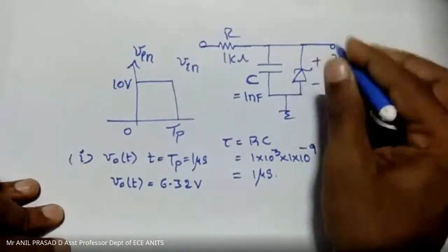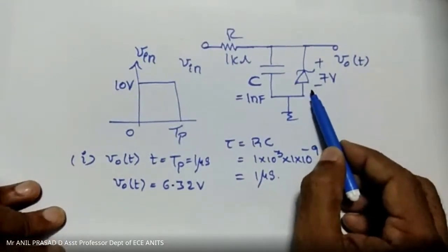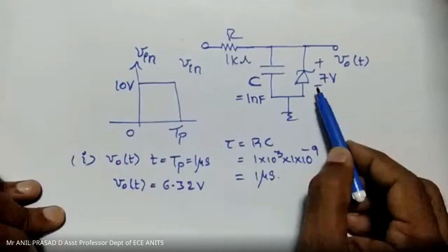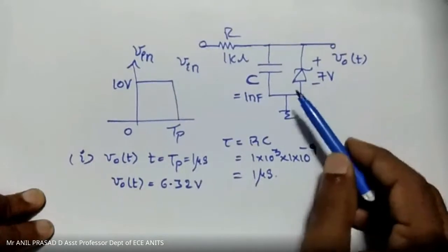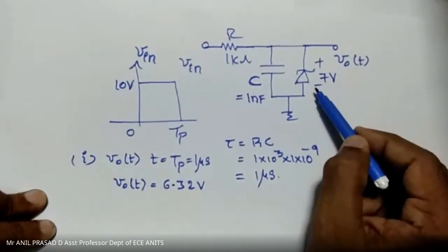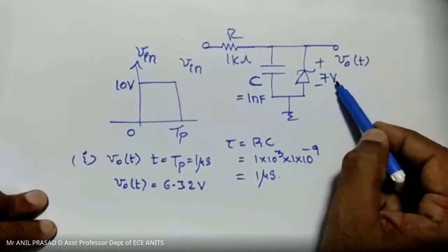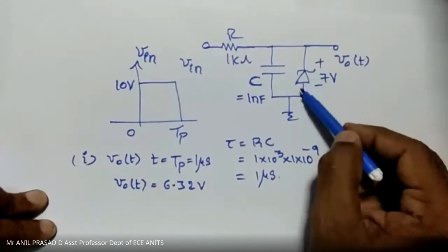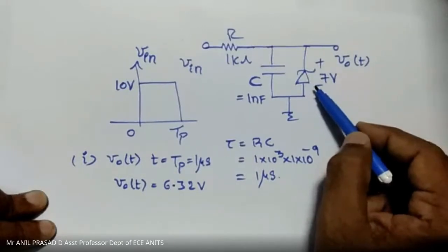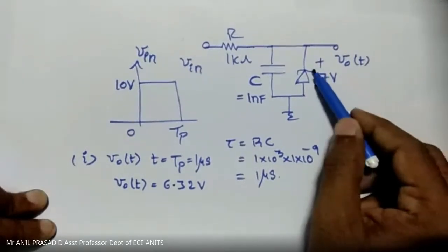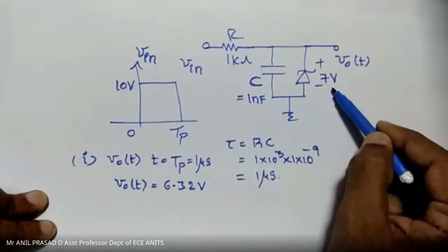The voltage across the Zener diode is given as 7 volts. The purpose of the Zener diode is voltage regulation through breakdown. It has a breakdown voltage and is normally used to provide a constant voltage. Only when the Zener diode is in the breakdown region will it act as a regulator, giving a constant voltage of 7 volts. If the Zener diode is not in the breakdown region, it is essentially open circuit — no current, no element at all. It only comes into the picture when operated in the breakdown region, which requires the applied voltage to exceed the breakdown voltage. Then it automatically sustains a constant 7 volts.